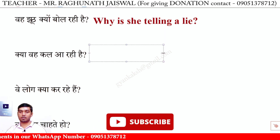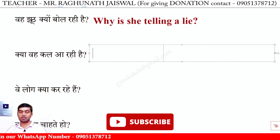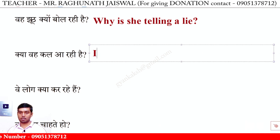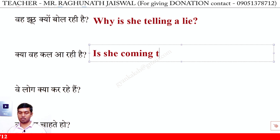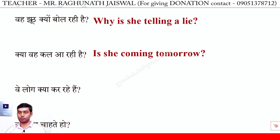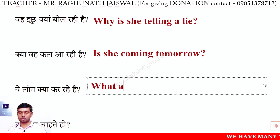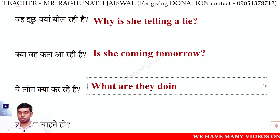क्या वह कल आ रही है? — Is she coming tomorrow? वह लोग क्या कर रहे हैं? — What are they doing?